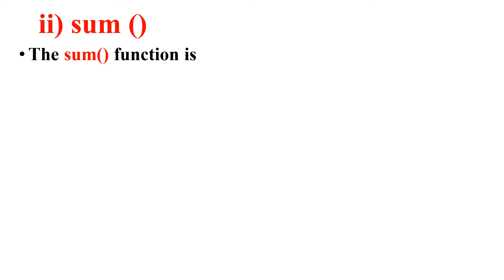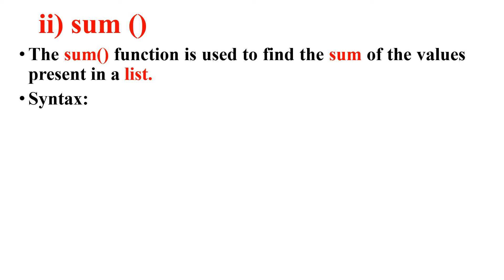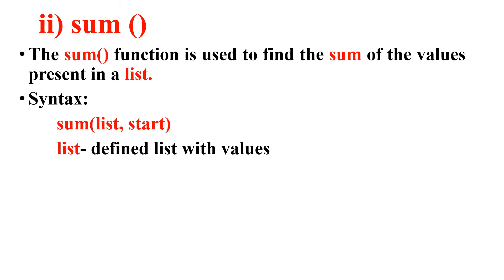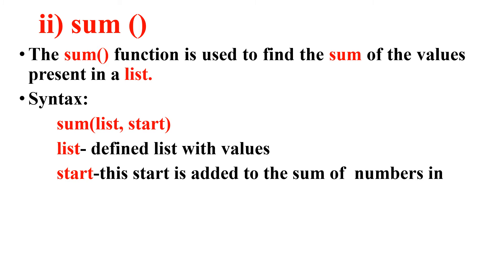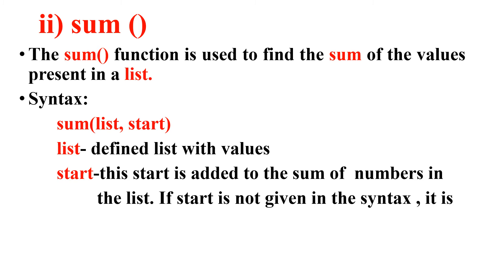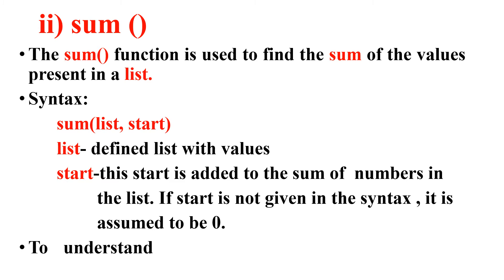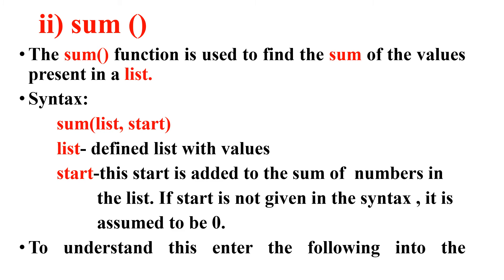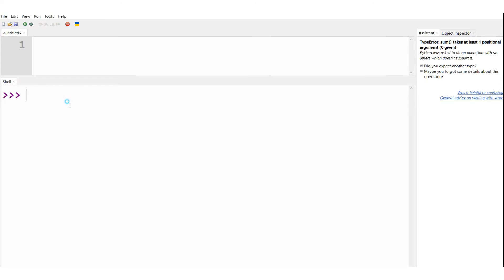Next, let me consider the second method — sum. The sum function is used to find the sum or total of the values present in a list. The syntax is sum(list, start). Here, 'list' is the defined list with values, and 'start' is added to the sum of numbers in the list. If start is not given, it is assumed to be zero.